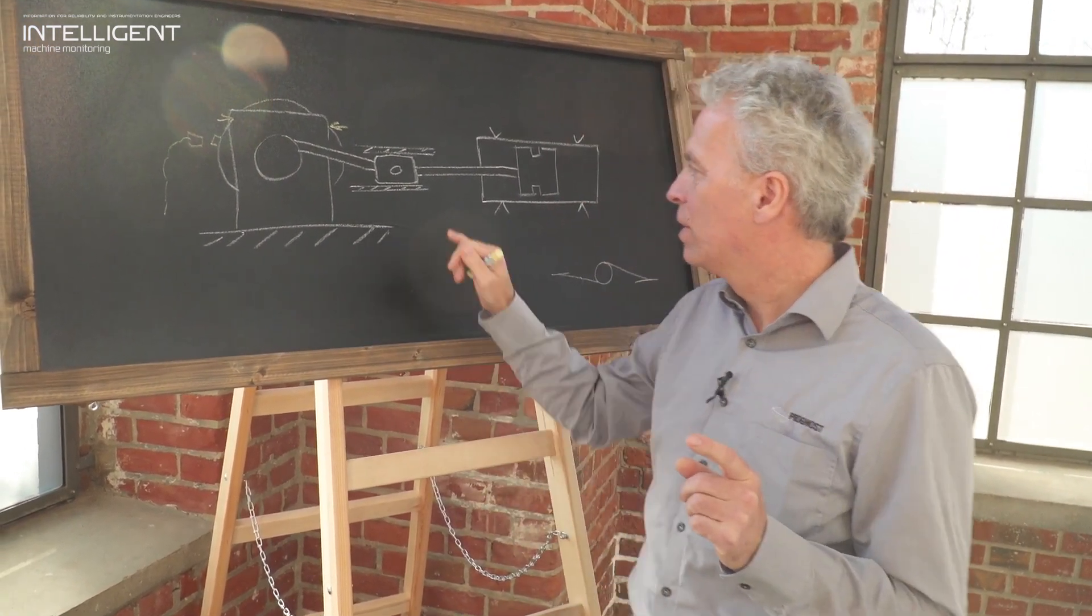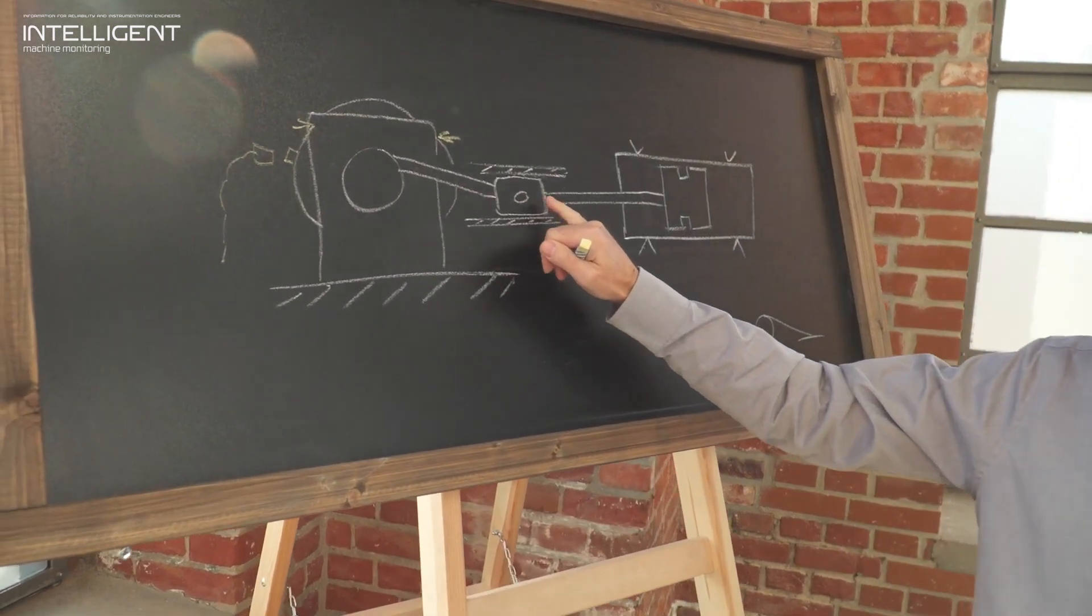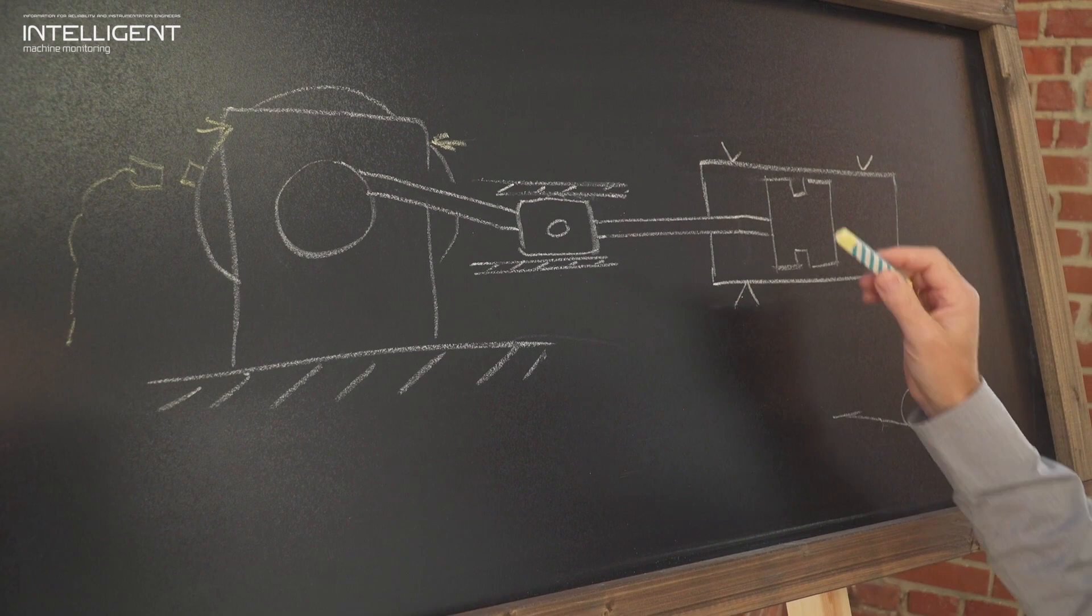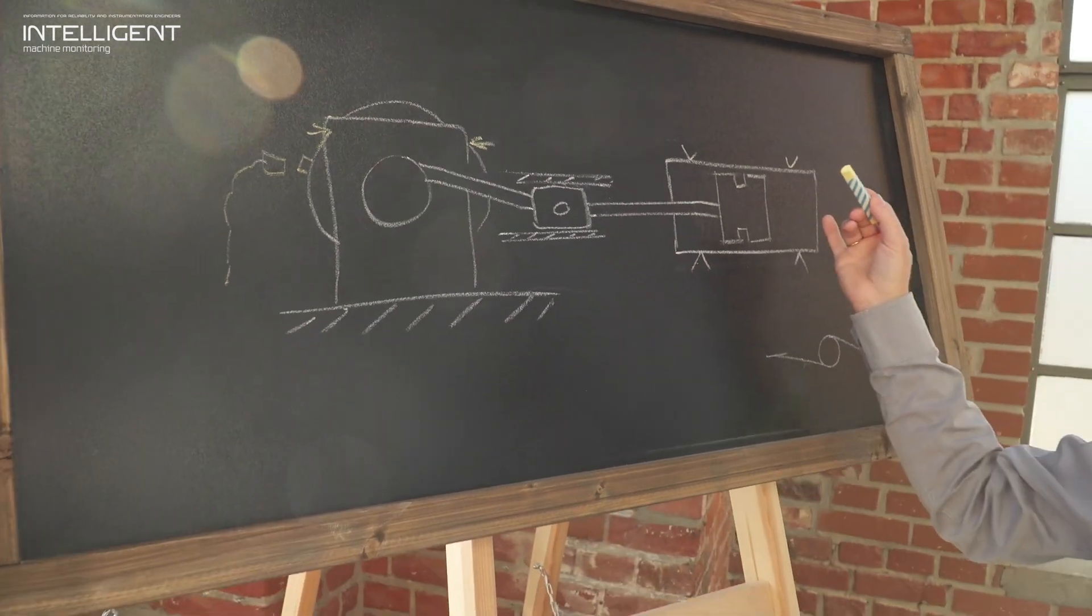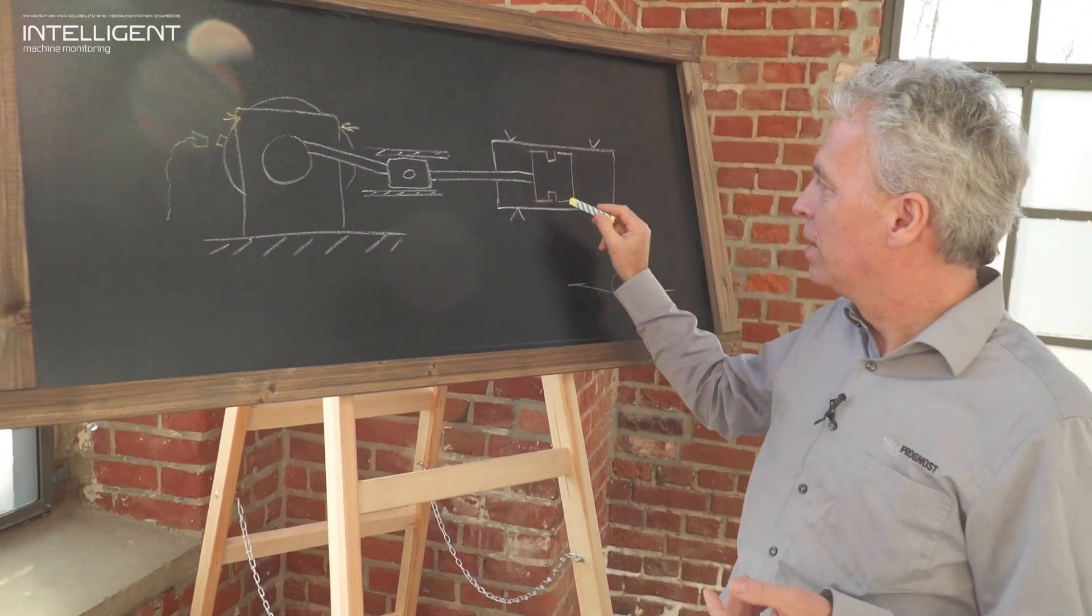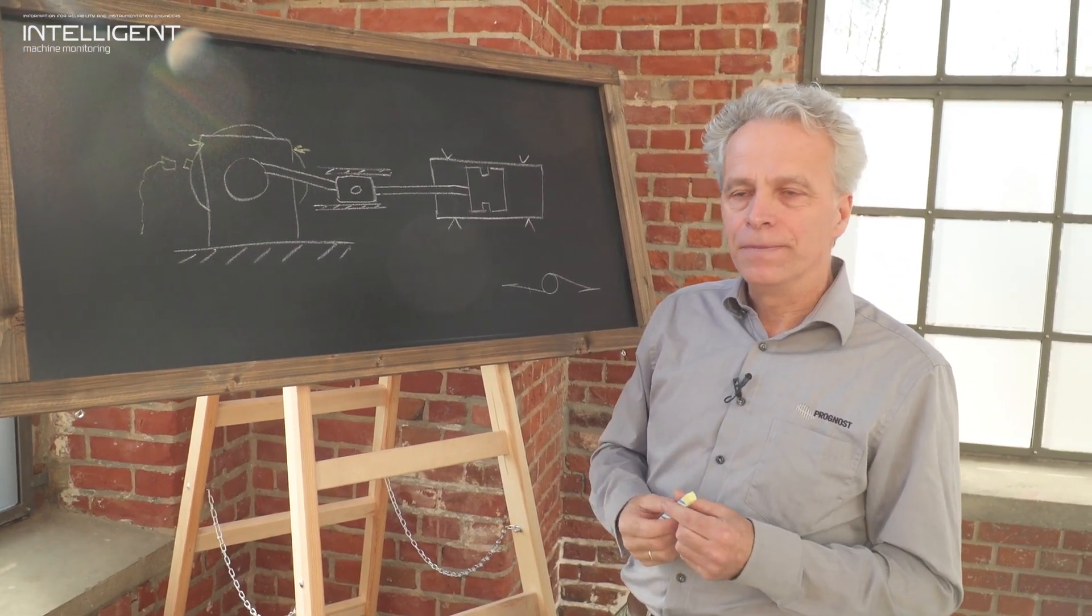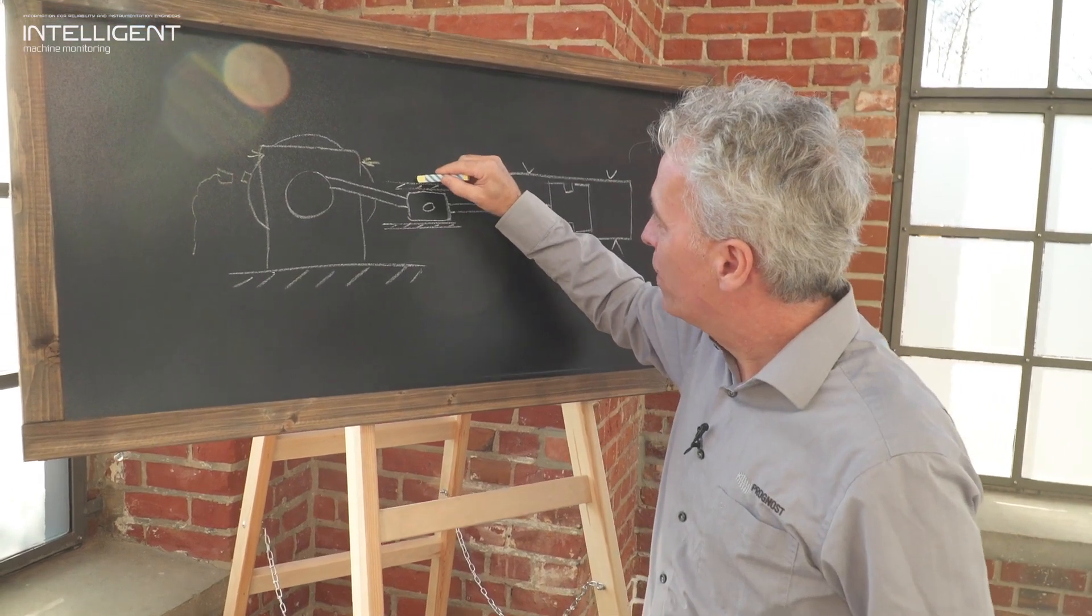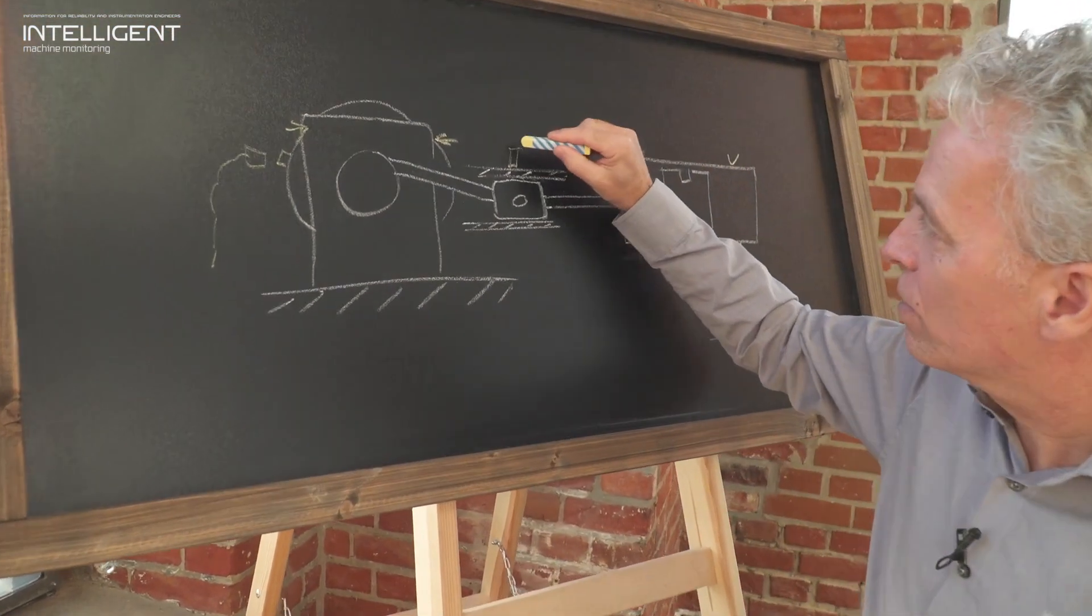In case it moves like this and bangs to the upper or to the lower crosshead guide, this indicates for example loose mechanical connections between the crosshead and the piston rod, or the piston rod and the piston. It might indicate liquid slacks, broken rider rings, or any mechanical disintegrity.